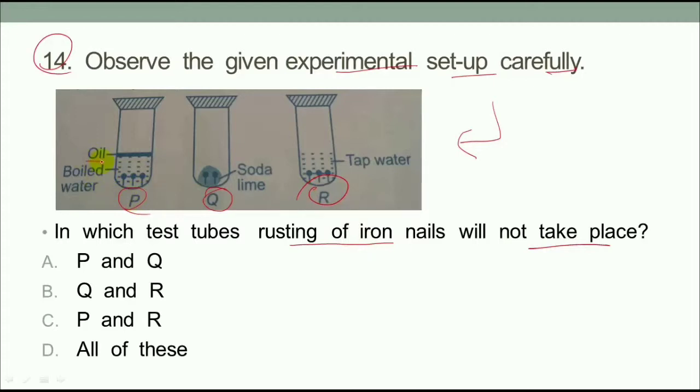What do you need to add to iron? Look, P has oil and boiled water. Q has soda lime and tap water. The first thing you need to understand about rust: what should you do for rusting? Oxygen or moist environment, right? In test tube P, the iron nail will not rust because it is boiled water. In boiled water, there is no oxygen.